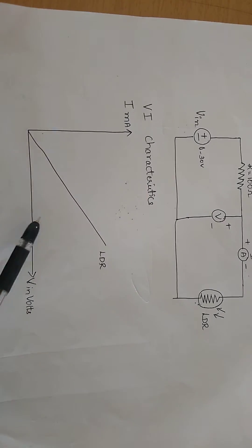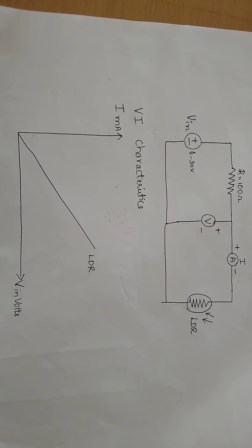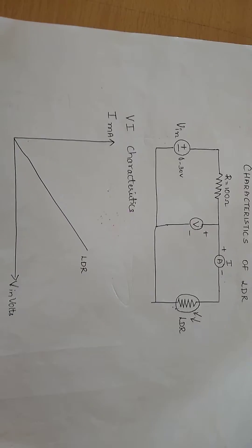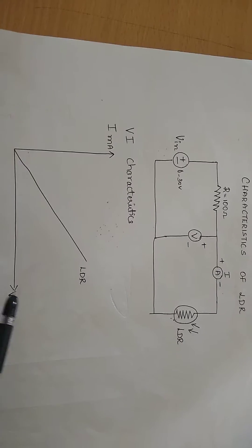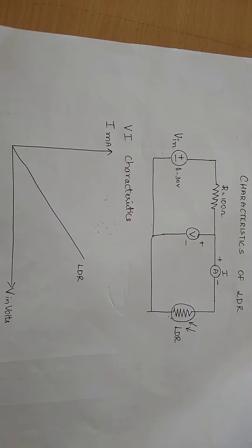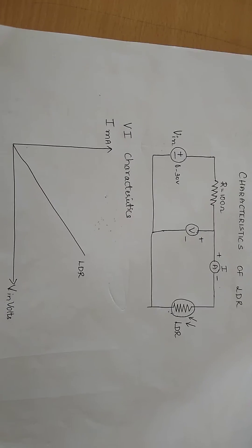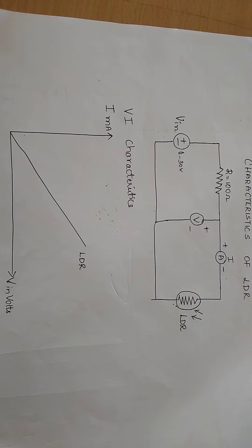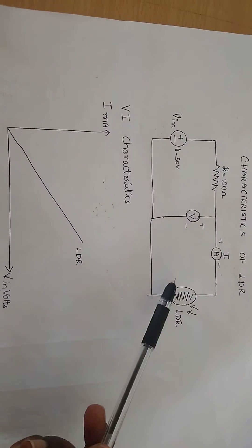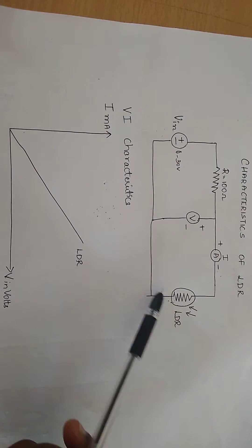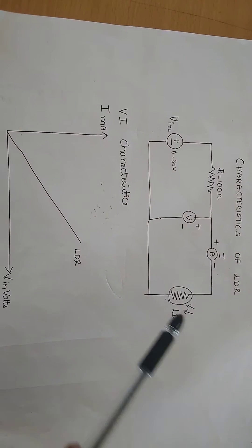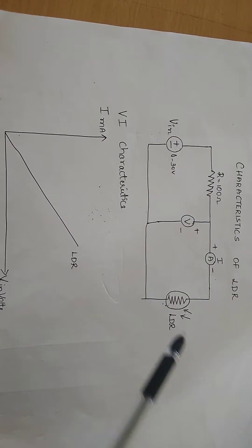And this is the VI characteristics, that is voltage versus current in milliamperes. This LDR changes its resistance depending on how much light rays fall on it. If the light intensity increases, the resistance decreases. If light intensity decreases, the resistance increases.